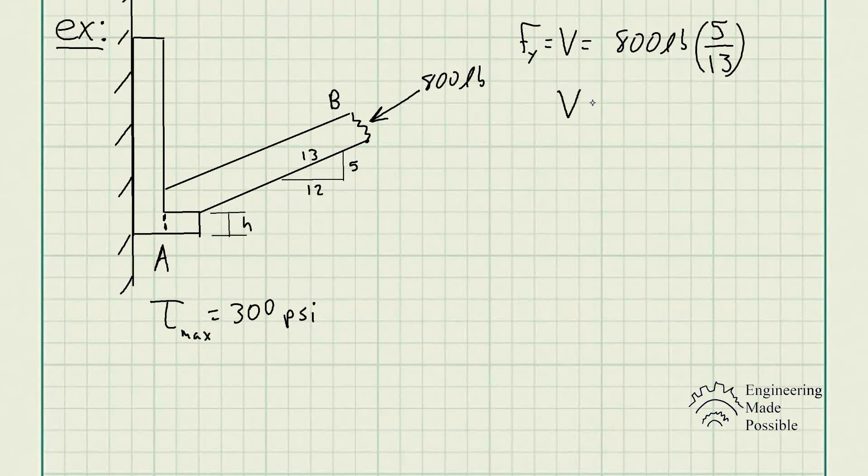This shear force is equal to 307.7 pounds. Now let's write the equation of shear stress: shear stress equals the shear force divided by the cross-sectional area. In this case, the cross-sectional area is just going to be rectangular. We know that it's going to be 3/8 inch thick.